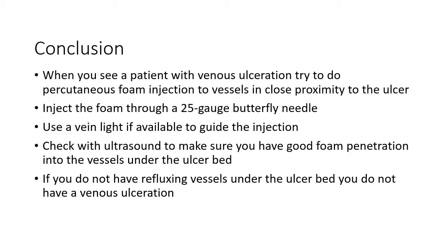In conclusion, when you see a patient with venous ulcerations, try to do percutaneous foam injection to vessels in close proximity to the ulcer if possible. Inject the foam through a 25-gauge butterfly needle. Use a vein light if possible — this will help you guide your injections. After you inject, check with an ultrasound to make sure you have good foam penetration to the vessels under the ulcer bed. If you cannot do a percutaneous injection due to marked fibrosis or scarring, then you will have to do the TIRS procedure, which is ultrasound-guided foam sclerotherapy into refluxing vessels as close as possible to the ulcer bed.